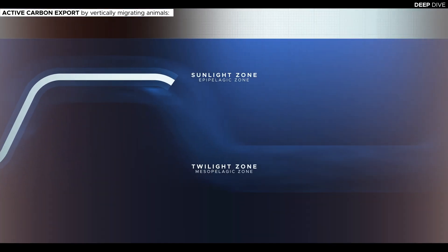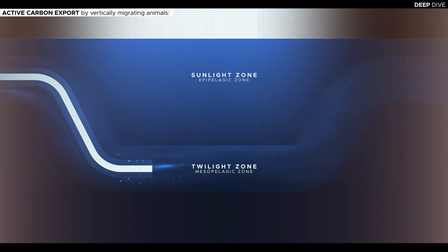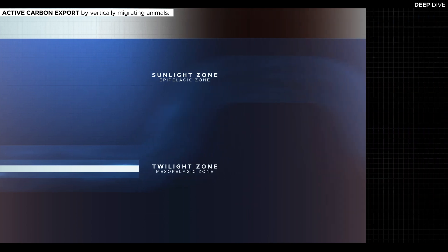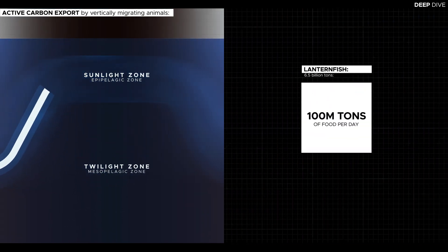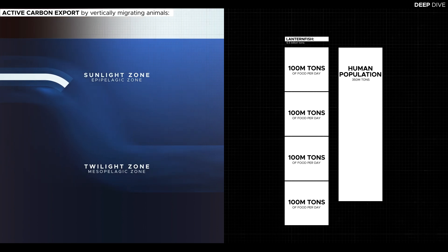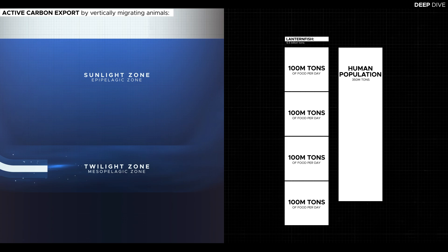Through these migrations, tens of millions of tons of food are exported to the deep ocean every night, and with it, enormous amounts of carbon. Assuming each fish consumes about 1.5% of its own body weight each day, it would take the entire population of lanternfish just one week to consume the weight equivalent of the human population in food.